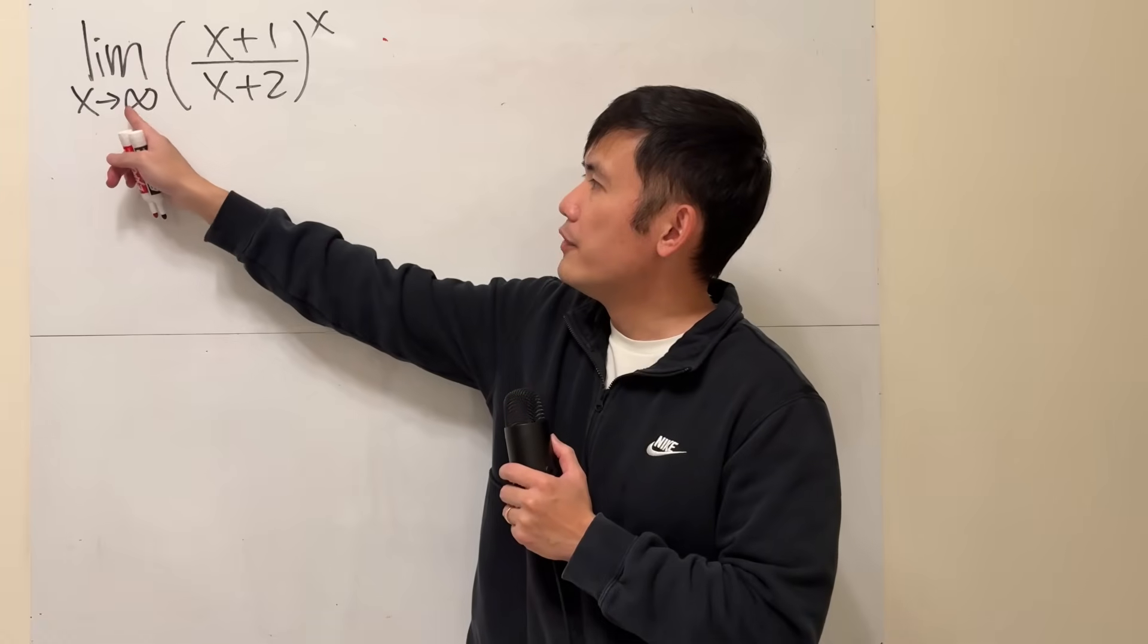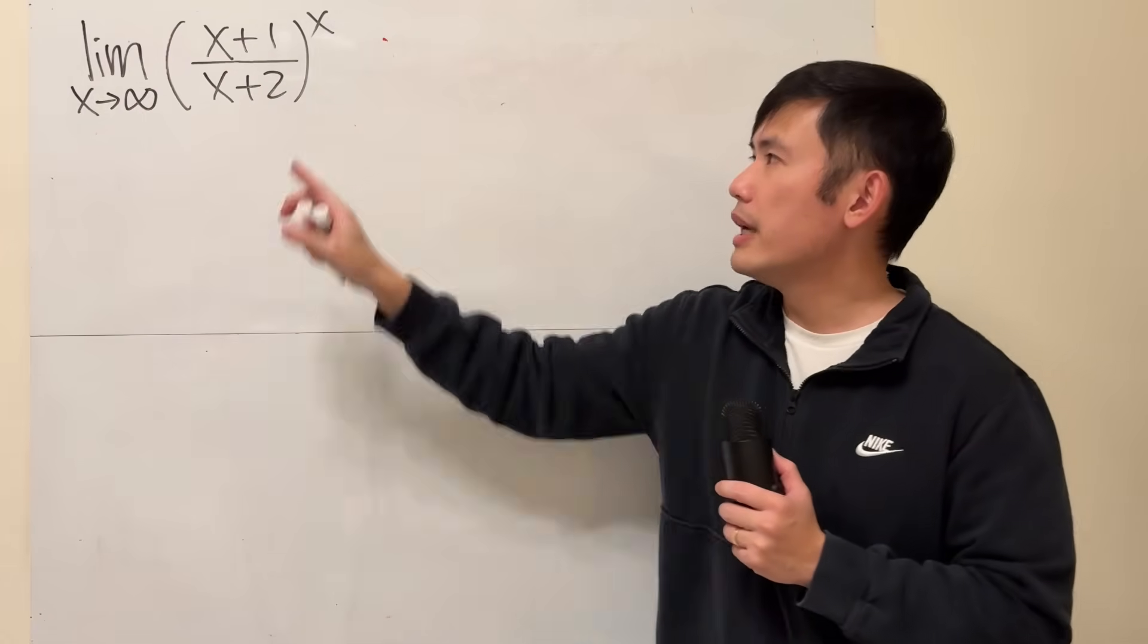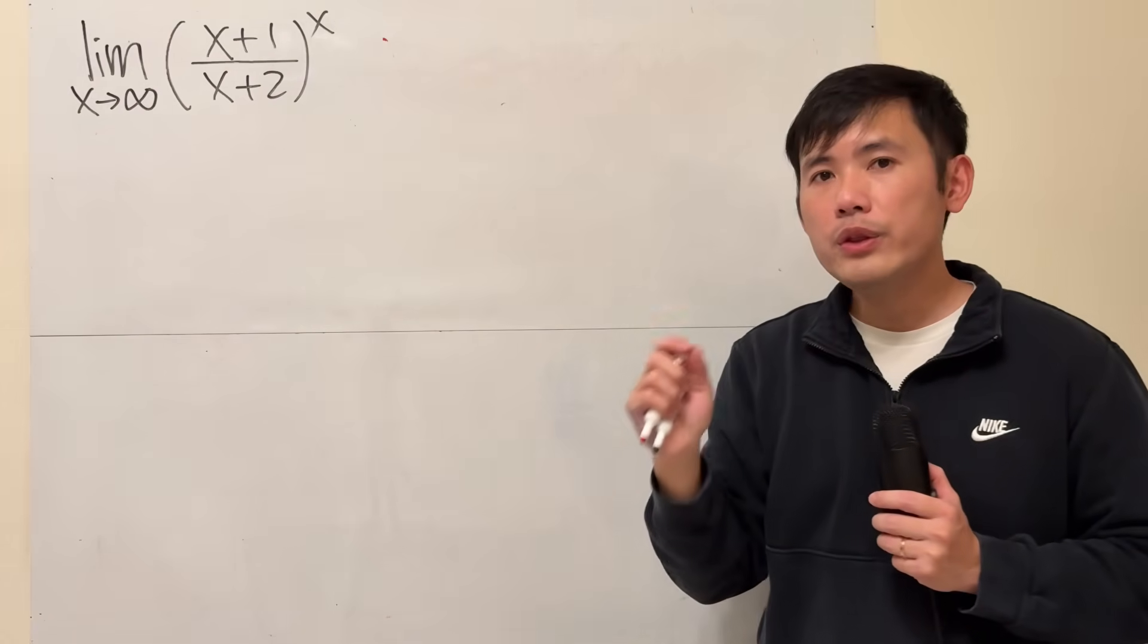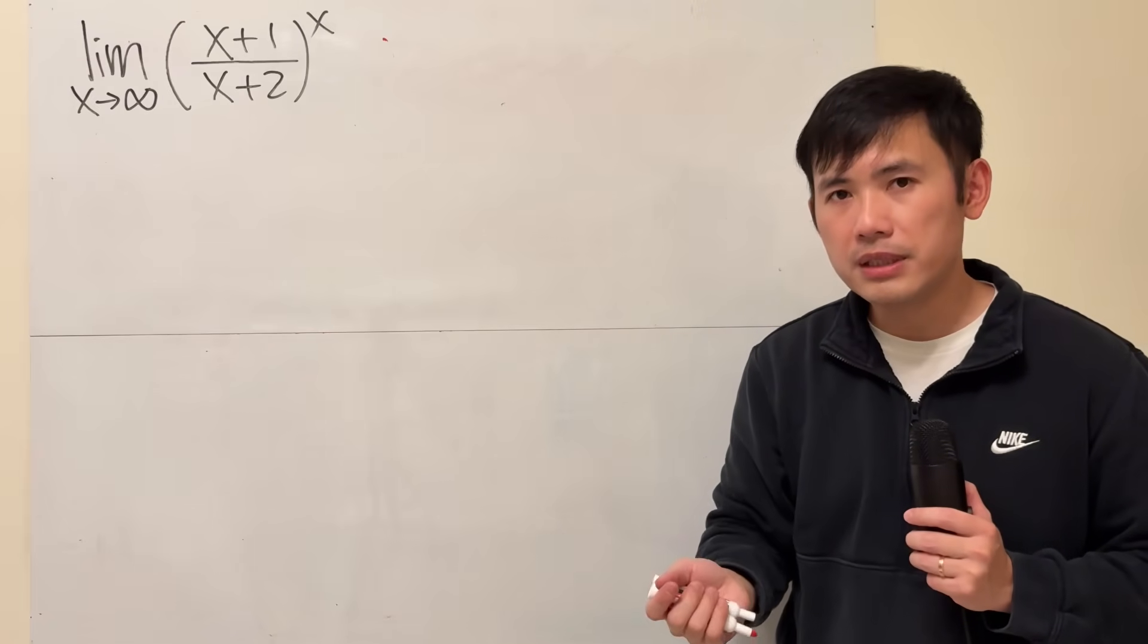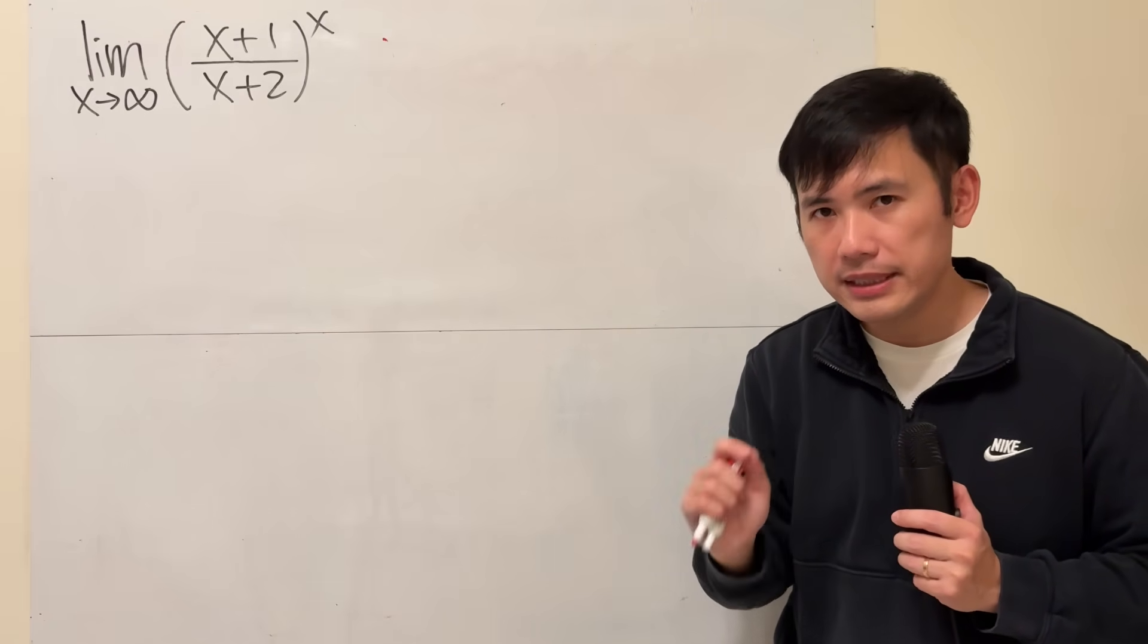Notice that when we have this limit, if you put infinity to all the x's, the inside here will give you 1, and the power is infinity. 1 to the infinity, when dealing with limits, is an indeterminate form, meaning that we don't know what the answer is yet.